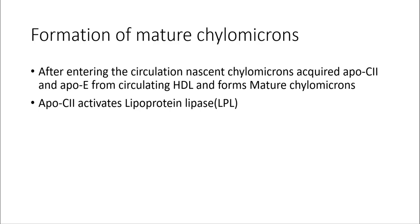After entering the circulation, nascent chylomicron acquires ApoC2 and ApoE from circulating HDL. HDL is known as high density lipoprotein or good cholesterol, and HDL donates two apolipoproteins — ApoC2 and ApoE — to the nascent chylomicron, converting it into mature chylomicron. ApoC2 activates one enzyme known as lipoprotein lipase, LPL, which is the major enzyme involved in chylomicron metabolism.